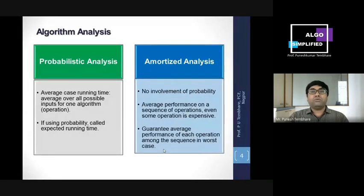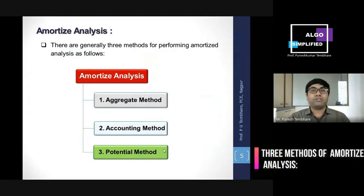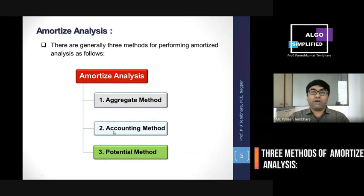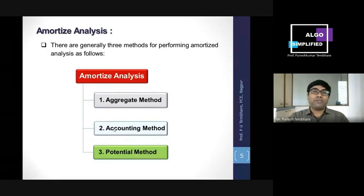To perform amortized analysis, we generally have three methods. The first method is called the aggregate method, the second is called the accounting method, and the third is called the potential method. Among these three methods, we will study the first method — the aggregate method — in today's class.